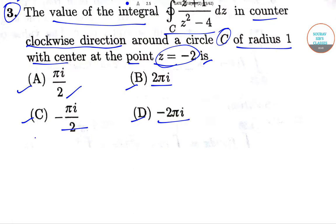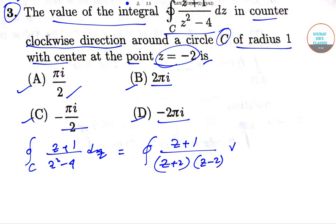The integration that we need to find out is integration z plus 1 upon z square minus 4 dz. Upon breaking the denominator down into factors, this will give us z plus 1 upon z plus 2 into z minus 2 dz.